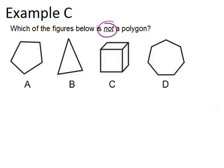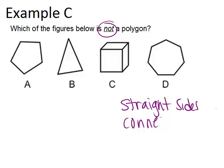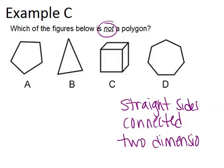So to be a polygon, again, it has to have straight sides. The sides have to be connected. It also has to be two-dimensional, meaning any sort of three-dimensional object is not a polygon, because it has more than two dimensions. Polygon, by definition, is actually two-dimensional.